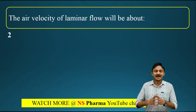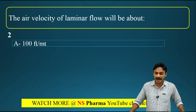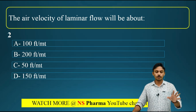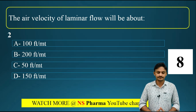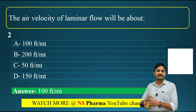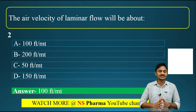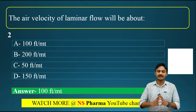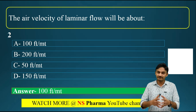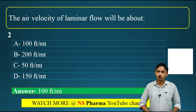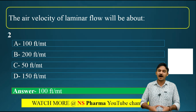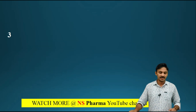Question number two: the air velocity of laminar flow will be about? Options are: A - 100 foot per minute, B - 200 foot per minute, C - 50 foot per minute, D - 150 foot per minute. The correct answer is option A - 100 foot per minute. If given in meters per second, you should opt for 0.5 meter per second.